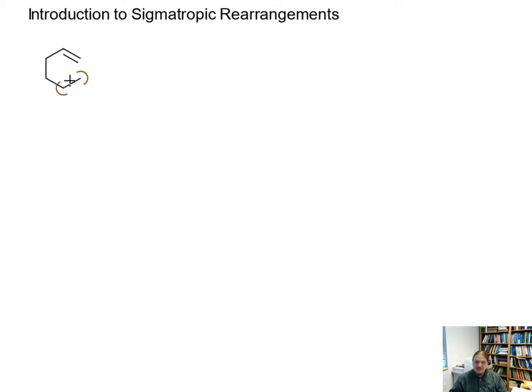One example of a sigmatropic rearrangement is this reaction which admittedly looks like there's nothing more I'm doing here than flipping the ring around. Actually I want to switch and draw an equilibrium arrow in between these two.